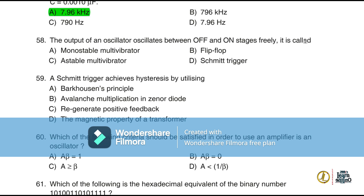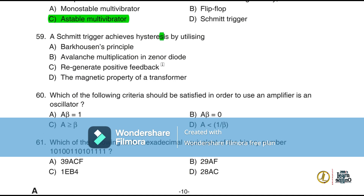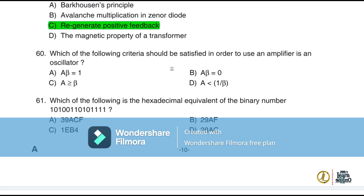Question 58: The output of an oscillator that oscillates freely between off and on states is called an astable multivibrator. Question 59: A Schmitt trigger achieves hysteresis by utilizing regenerative positive feedback. Question 60: The criterion that must be satisfied for an amplifier to be used as an oscillator is Aβ = 1.